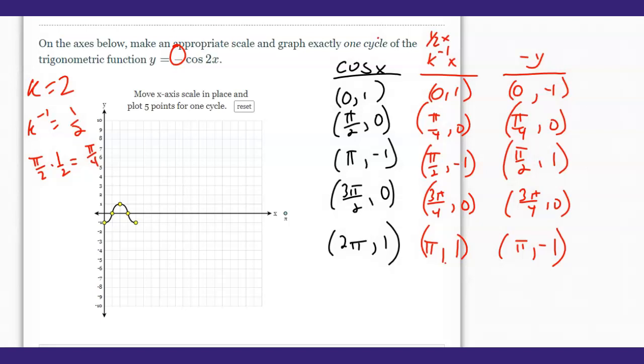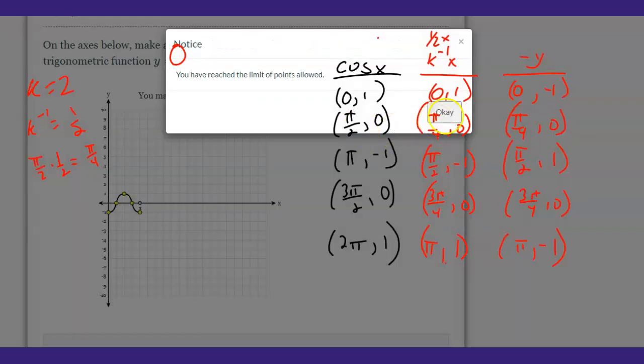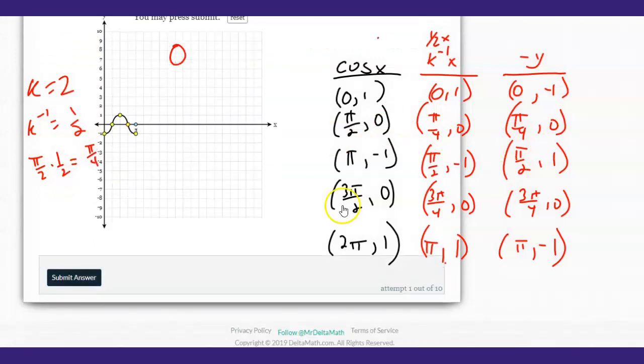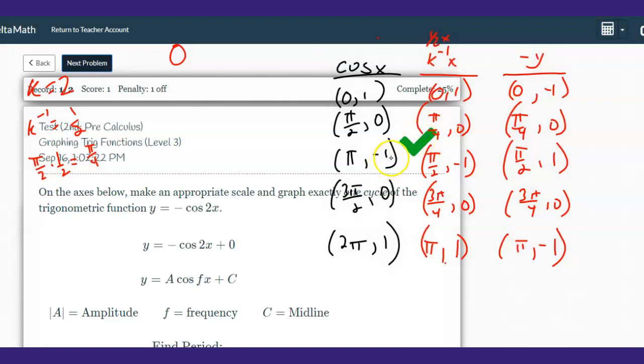But you got to remember to put this thing, the ending x value like that. Then scroll down here and hit submit. Are you sure? Yes. There's our grade show. So that is how you graph sine and cosine on Delta Math.